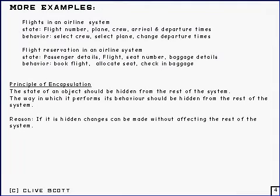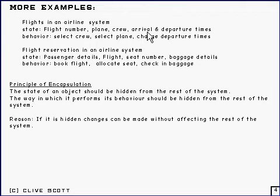Here's a couple more examples. If you imagine you're an airline and you've got an airline system of some sort, you might model flights. For a particular flight, you'll have a flight number, a plane allocated to that flight, a crew allocated as well, and arrival and departure times as typical state information. What you might want to be able to do with it is to select a crew for it, select a particular plane out of all the planes you've got, change the departure times, and lose the baggage probably as well — that sort of thing.